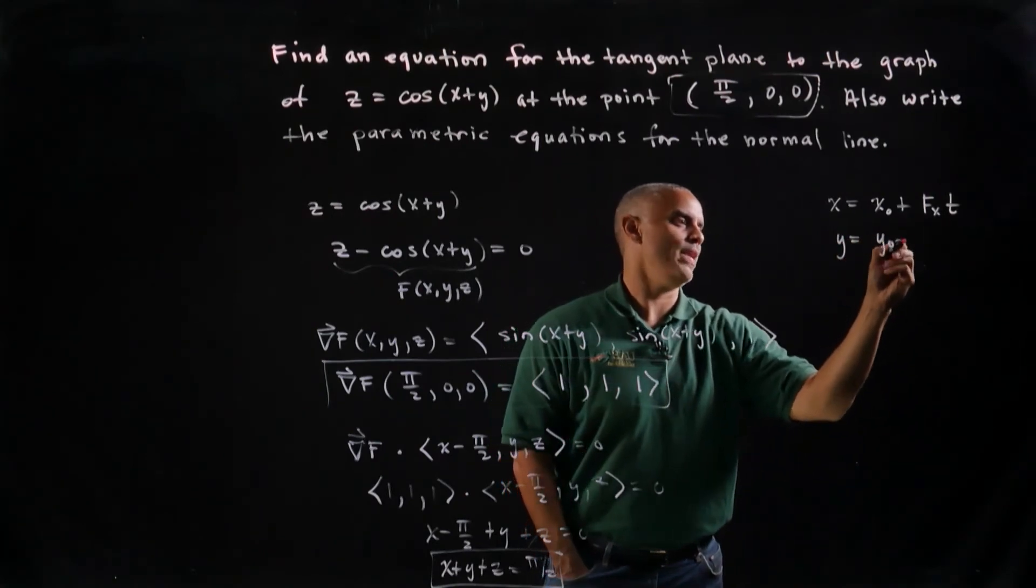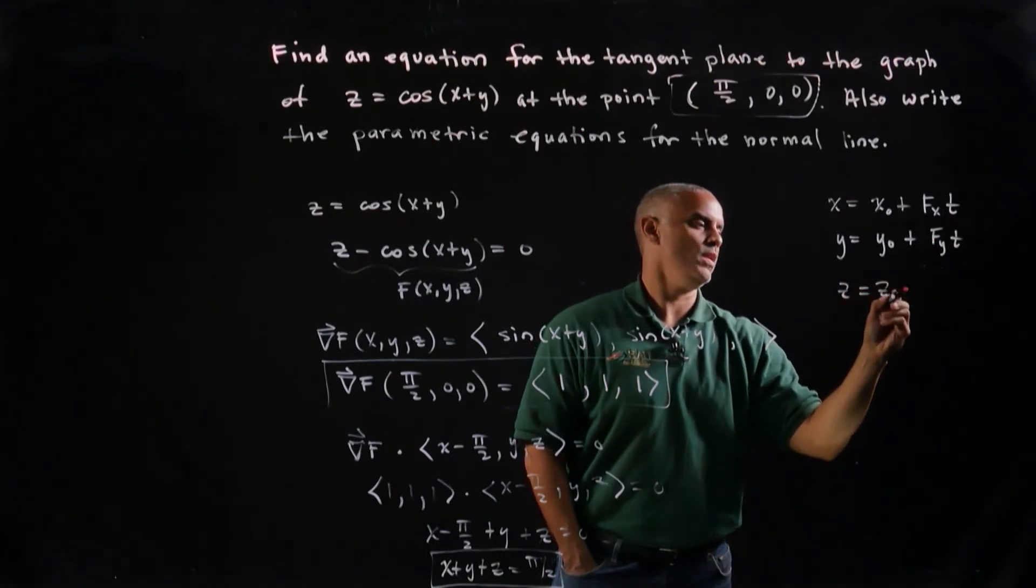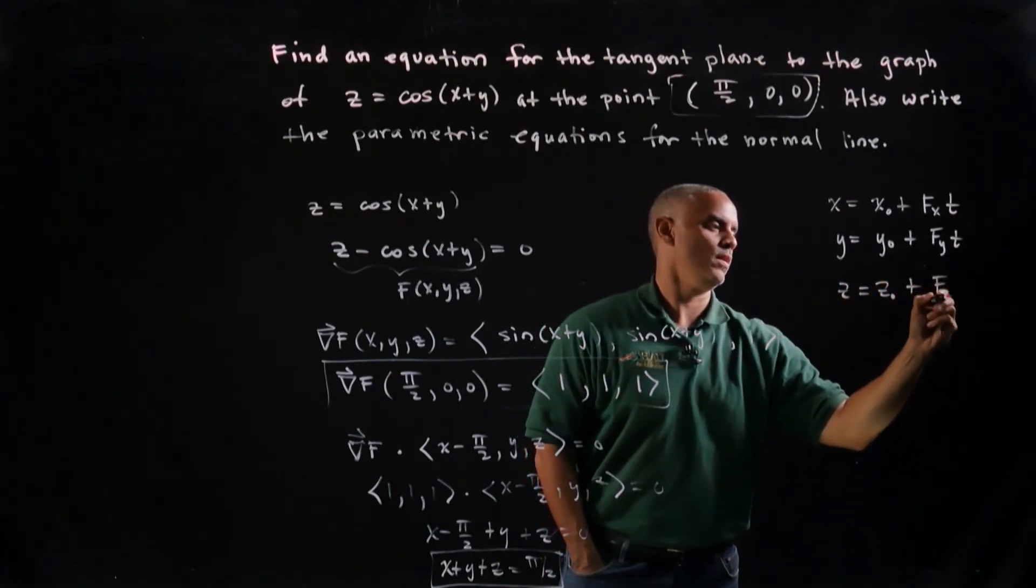So y equals y naught plus f_y times t, and z equals z naught plus f_z times t.